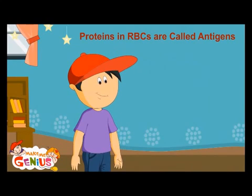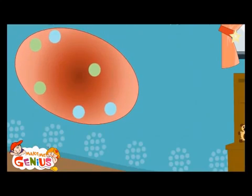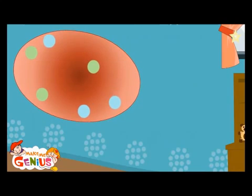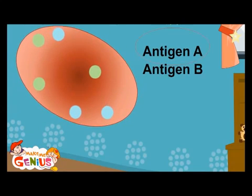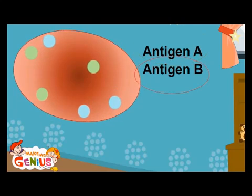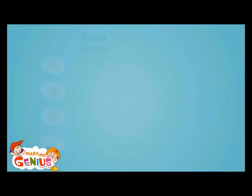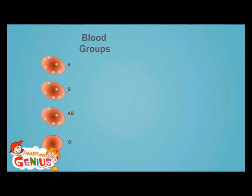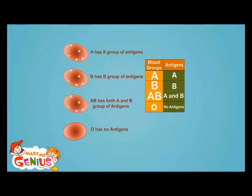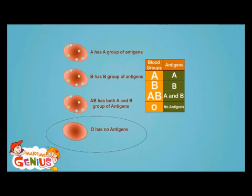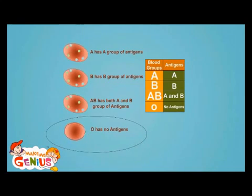Do we all have some antigens? No, not all have the same antigens. There are two types, A and B. We have either blood with A antigens or blood with B antigens. But actually there are four types of blood — there are a few people who don't have any antigens in RBCs. This is called zero-antigen blood, also called O-type.